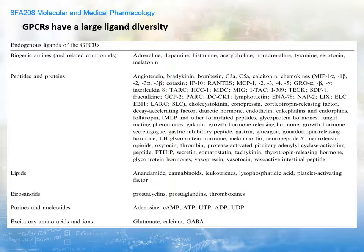It's an important fact that G protein coupled receptors have a large ligand diversity. As a common superfamily of molecules, they share a lot of structural features in common, but are able to bind numerous ligands, as you will see here and in the next slide. G protein coupled receptors have biogenic amines as ligands, including adrenaline, dopamine, histamine, acetylcholine, many neurotransmitters, and many hormones as well.